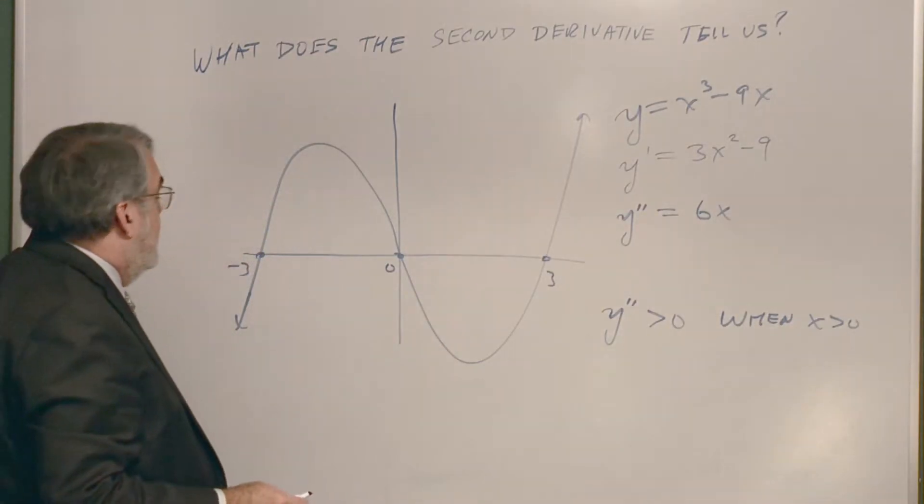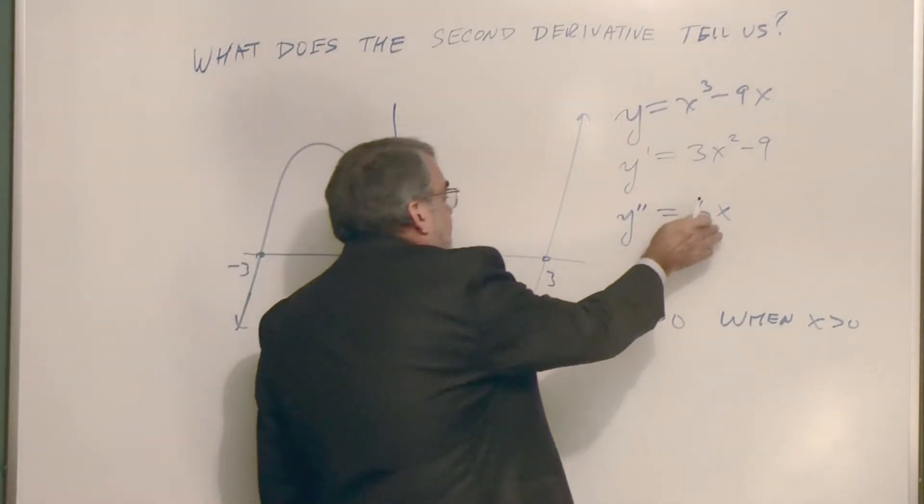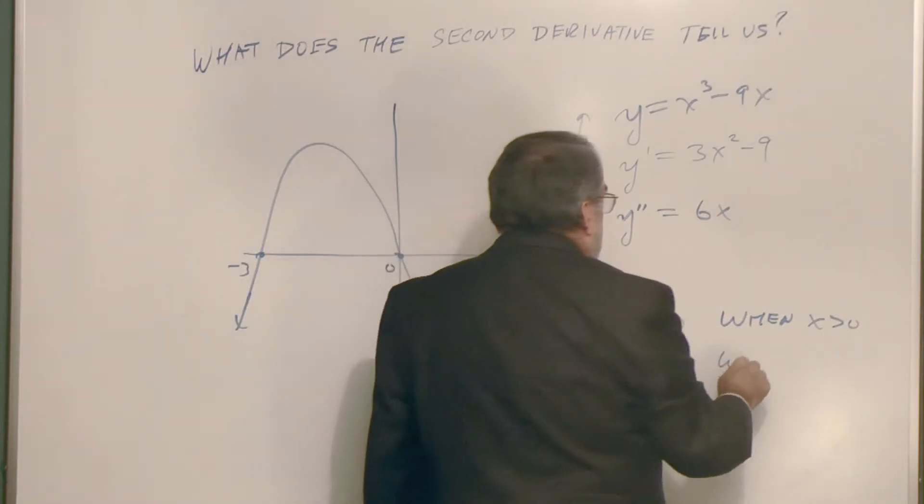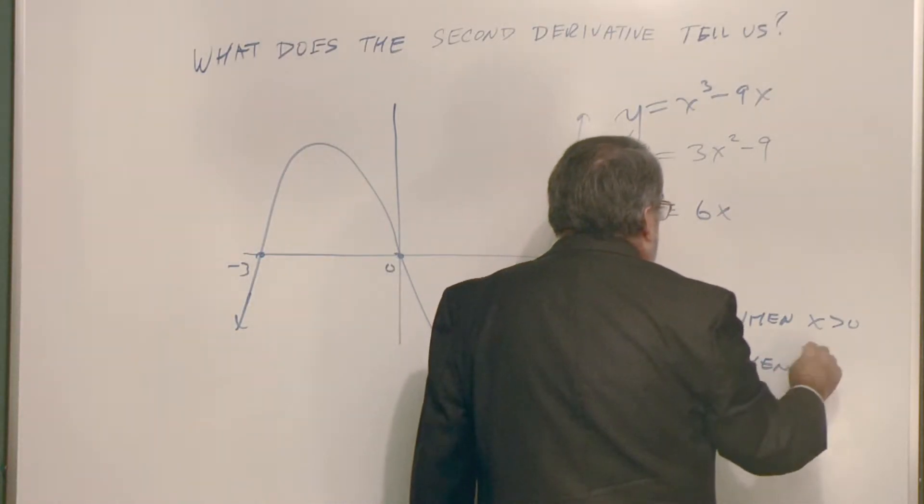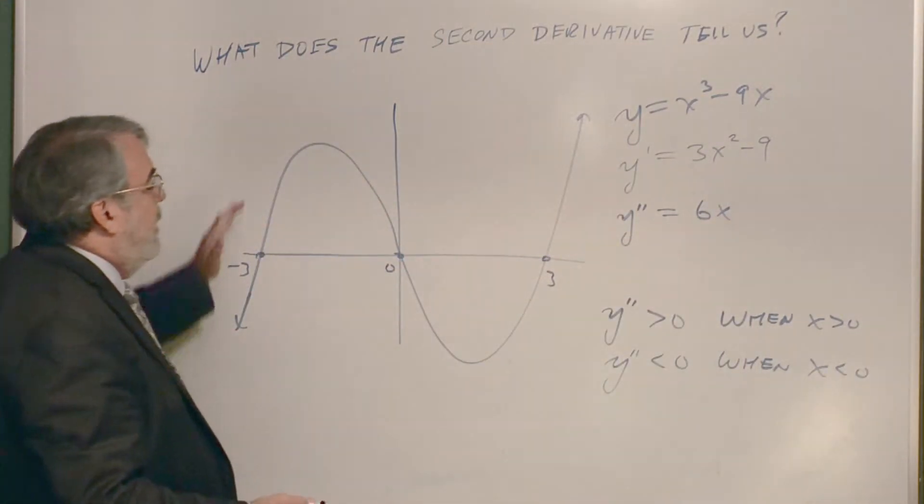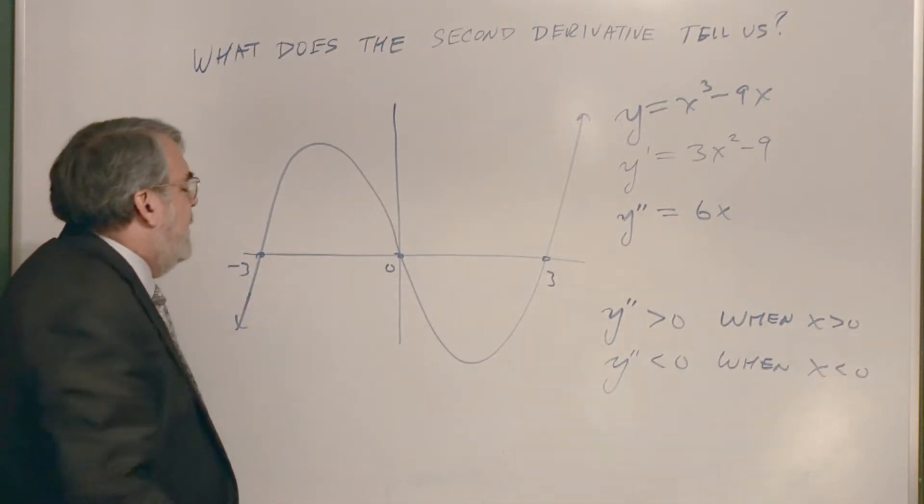And then likewise, it's going to be negative when x is negative. So when x is less than zero. So it has the concave down shape on this side of the graph.